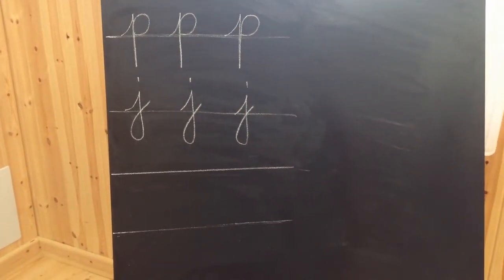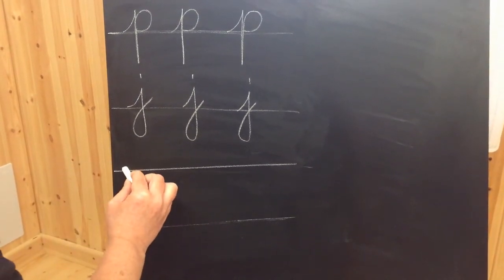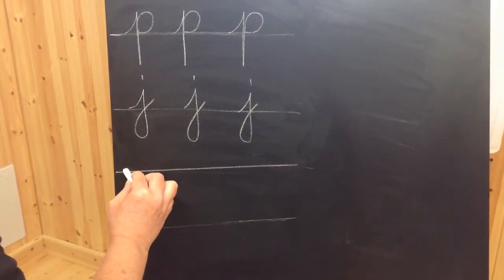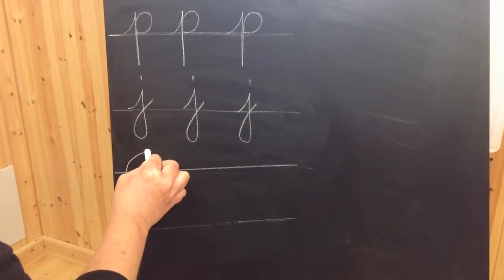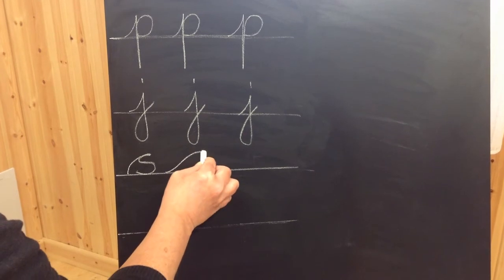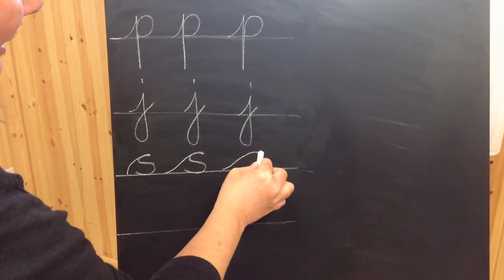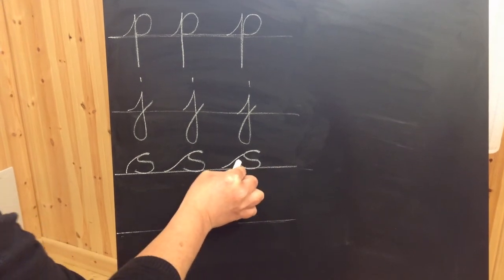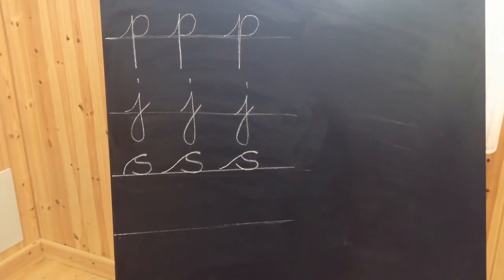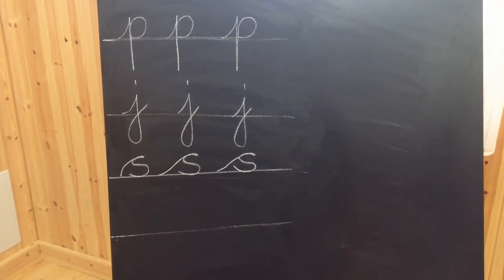And finally S. There are lots of ways of writing S. The way that we do it at school is starting with the lead in as if it was a letter C and then going back on ourselves. So we lead in, back on ourselves. The reason for the lead in is that when the children come to join their handwriting it makes it really easy for them.